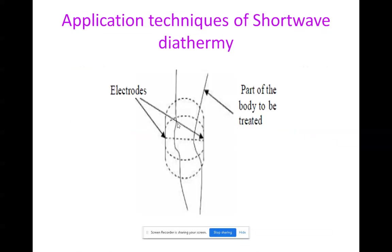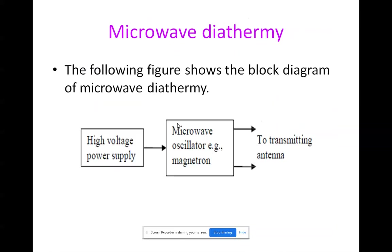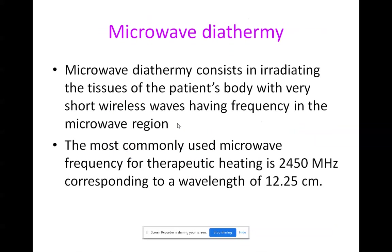The first type of diathermy is shortwave diathermy; the second type is microwave diathermy. Microwave diathermy consists of irradiating the tissue of the patient's body with very short wireless waves having frequency in the microwave region — that is, the gigahertz range. The most commonly used microwave frequency for therapeutic heating is 2450 MHz (2.4 GHz), corresponding to a wavelength of 12.25 centimeters.